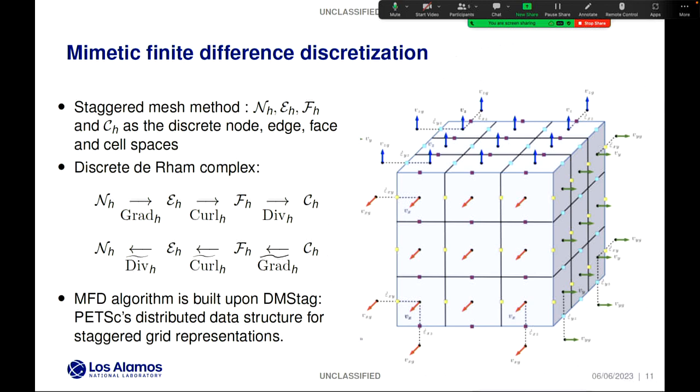The next part of my talk focuses on the mimetic finite difference discretization. The MFD employed here is a staggered mesh method, meaning unknowns can be defined on different locations of the mesh: vertices, edges, faces, and cell centers. We use this notation of calligraphic E, F, and C for the corresponding discrete spaces.